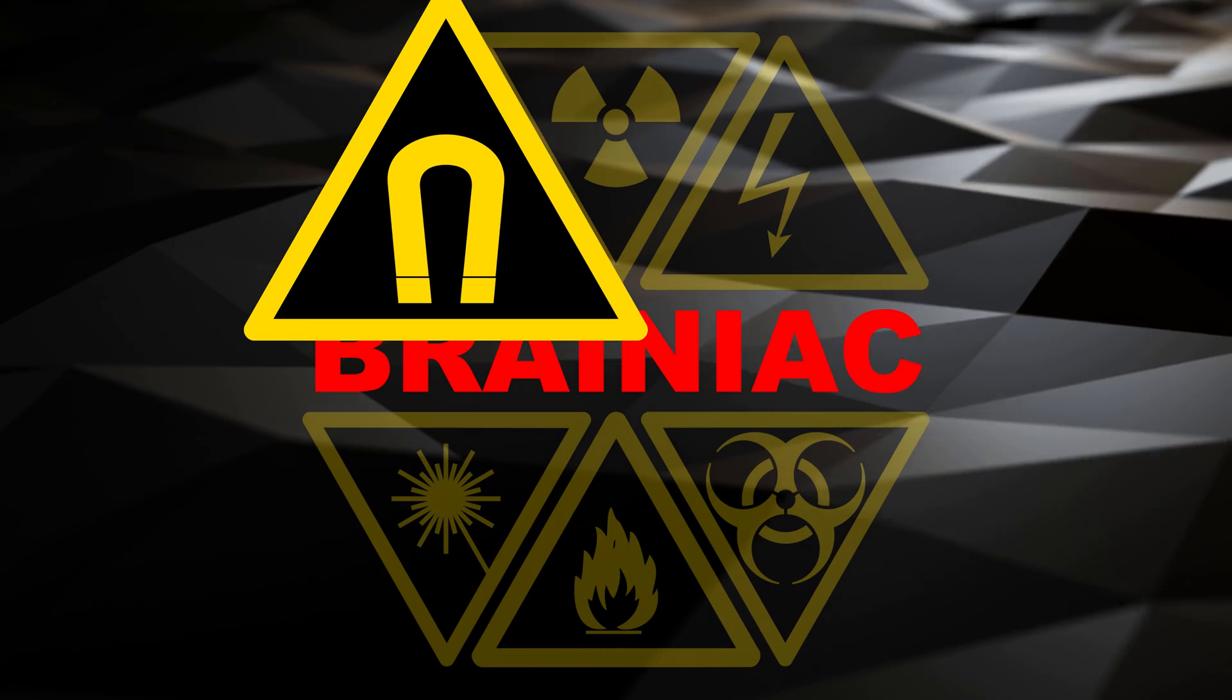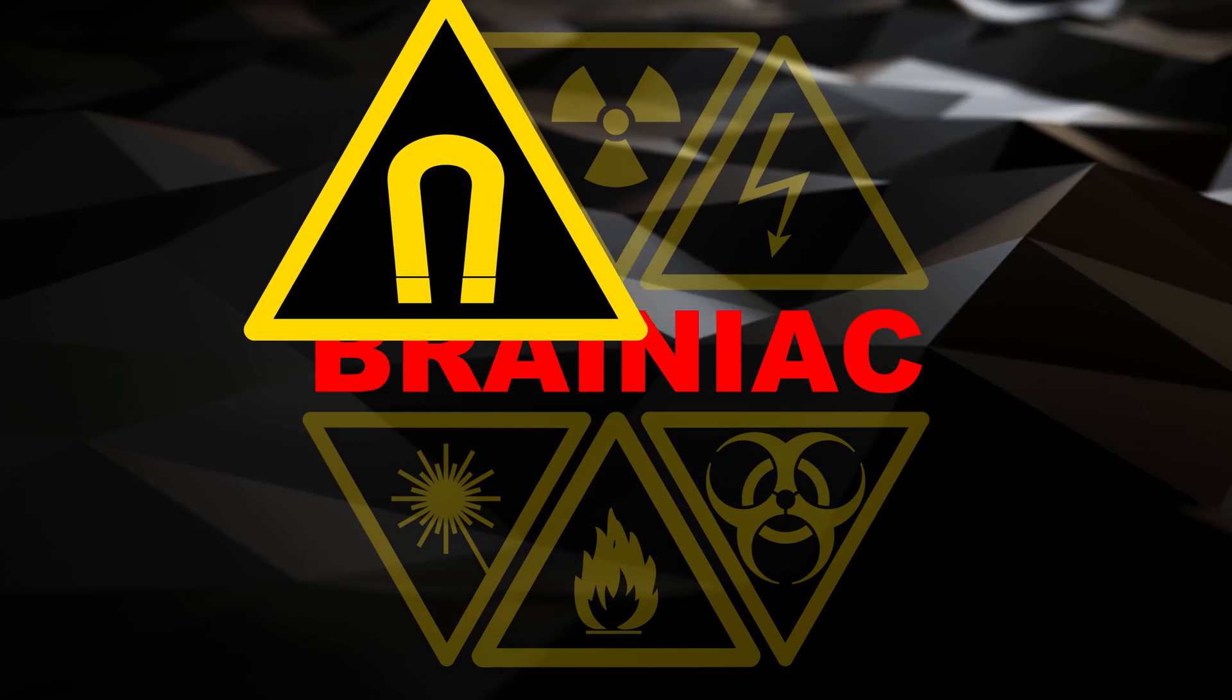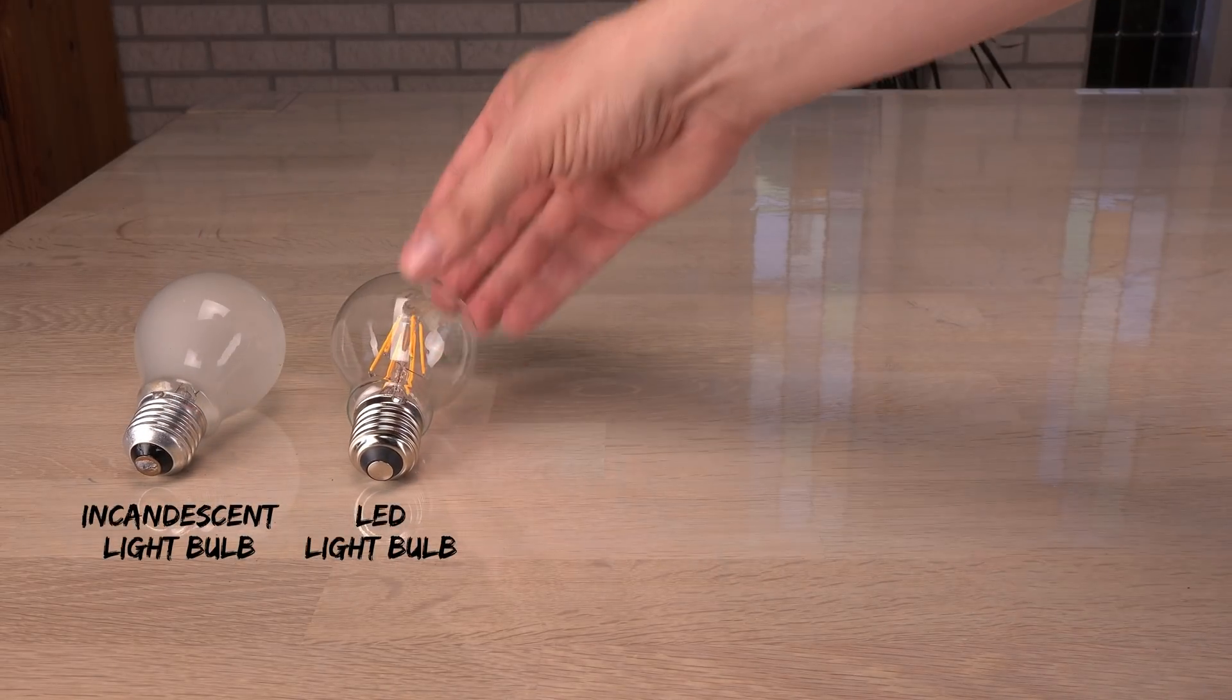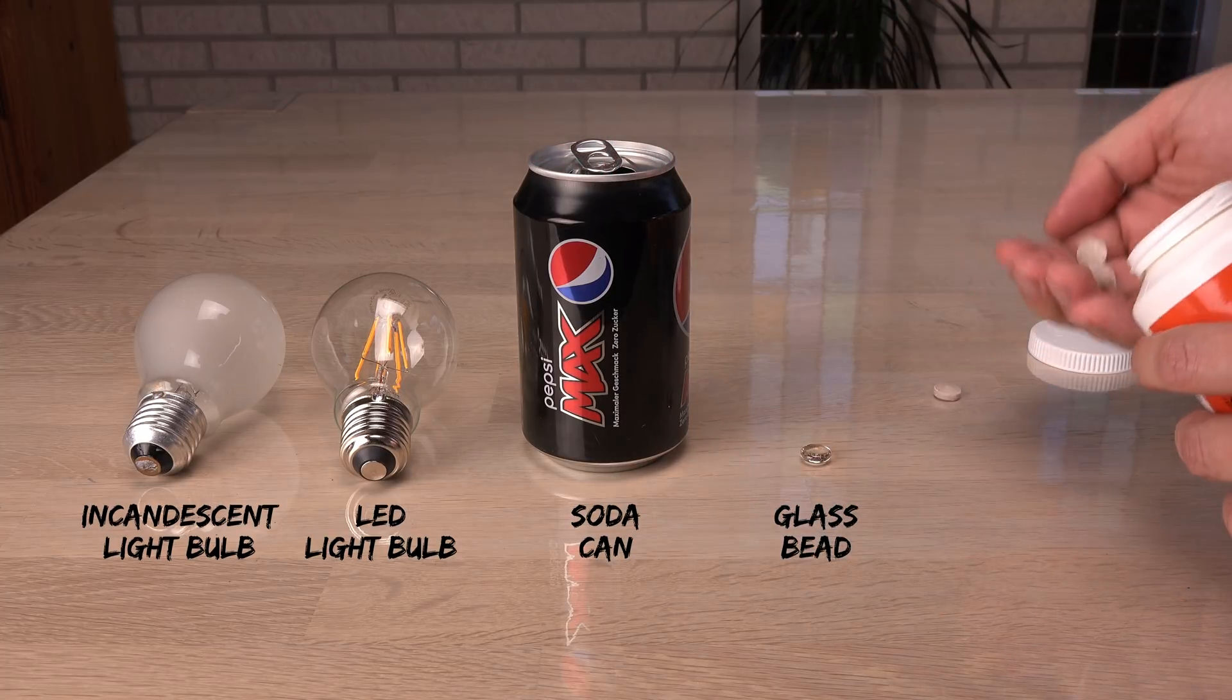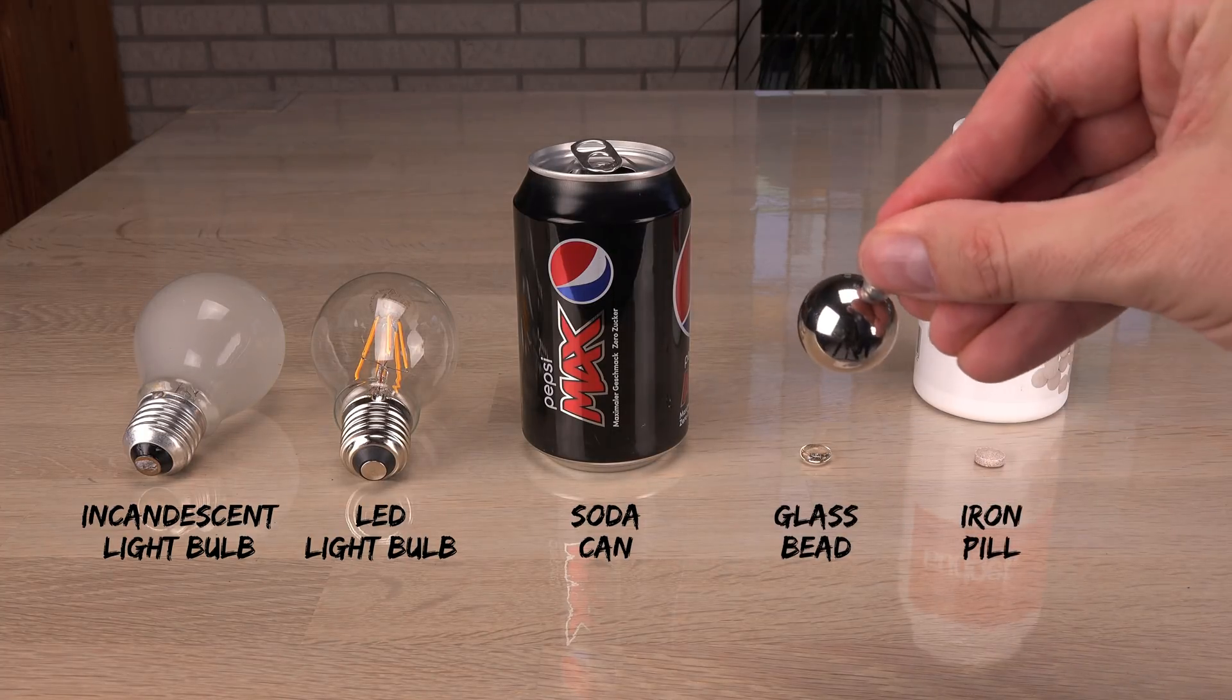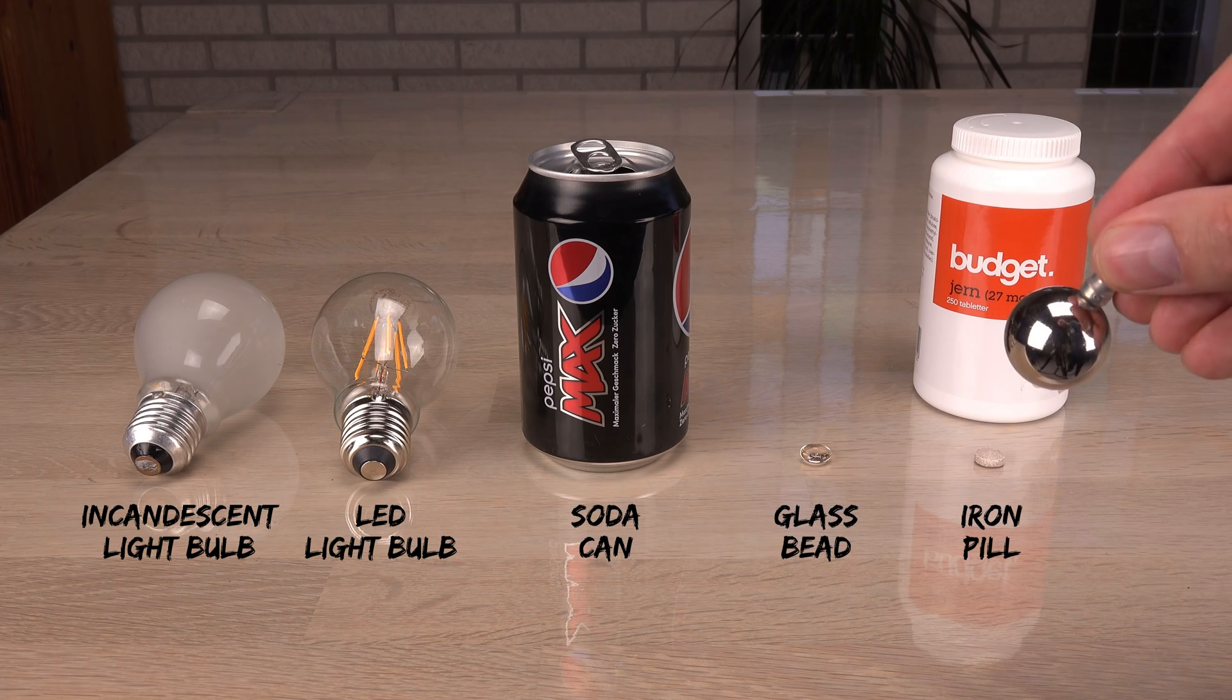Let's start with magnetism, the backbone of my channel. This will be a challenge for you to think about. I want you to have a guess at how many of the following objects can be lifted by a magnet: an incandescent light bulb, an LED bulb, a soda can, a glass bead, and an iron supplement, also known as an iron pill. How many of these five can be lifted by this magnet? I haven't given you much info, so consider it carefully and I'll give you the answer later in the video.